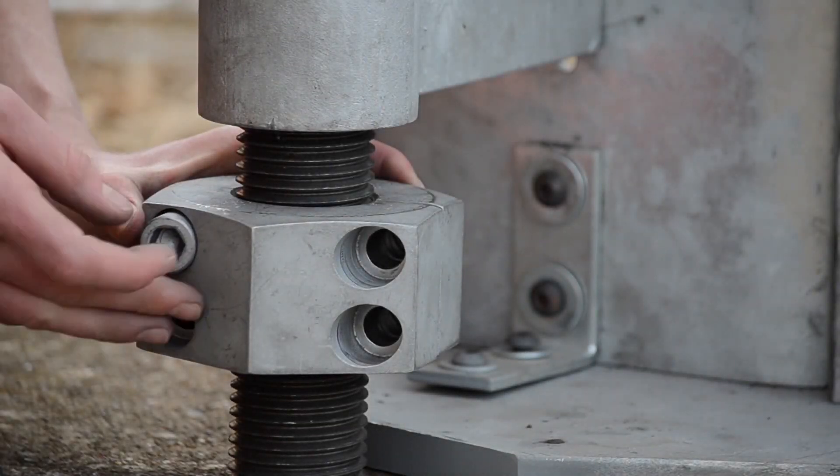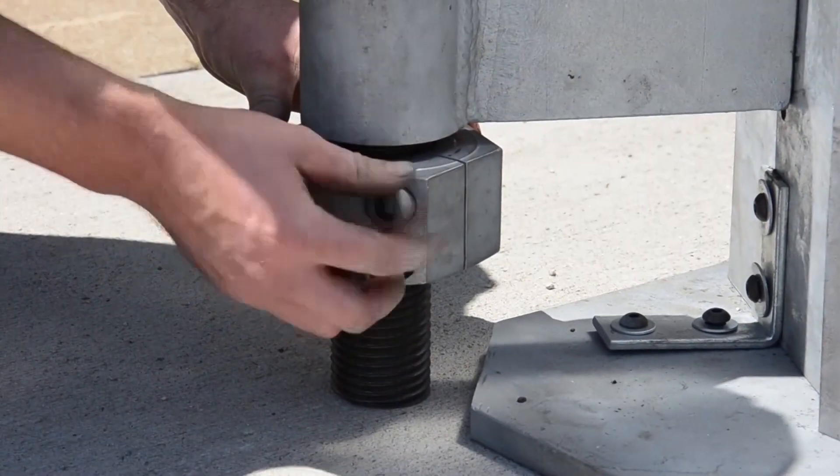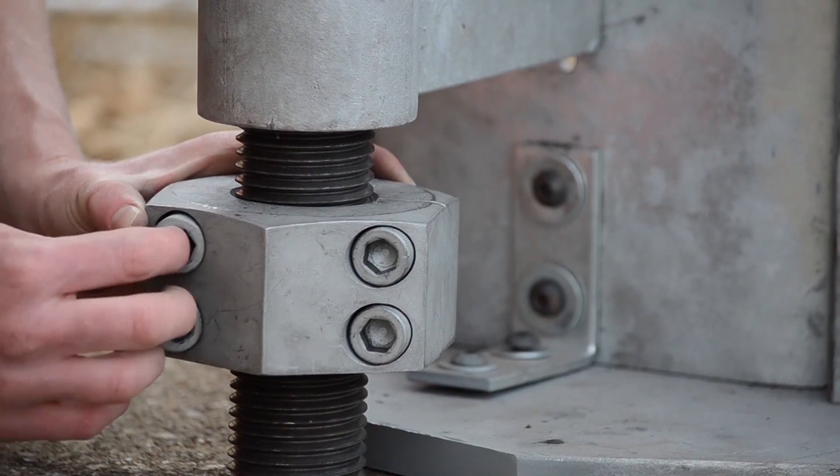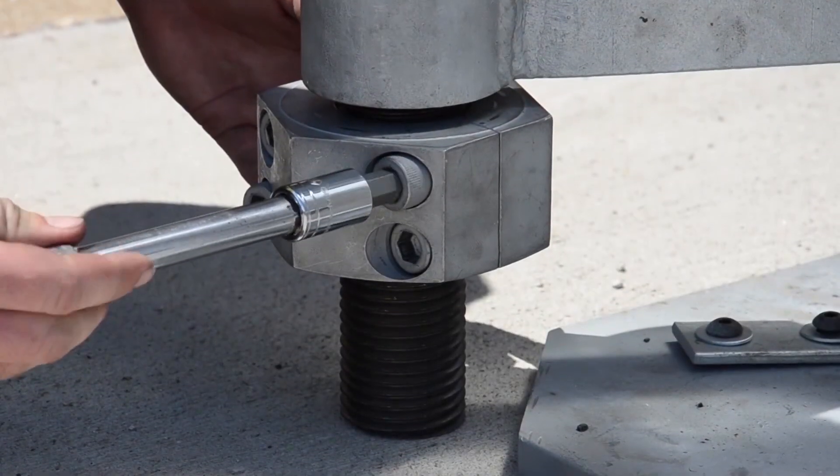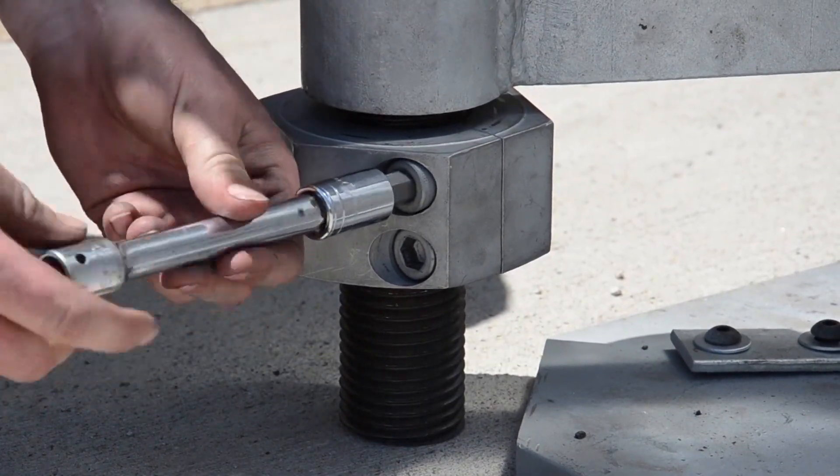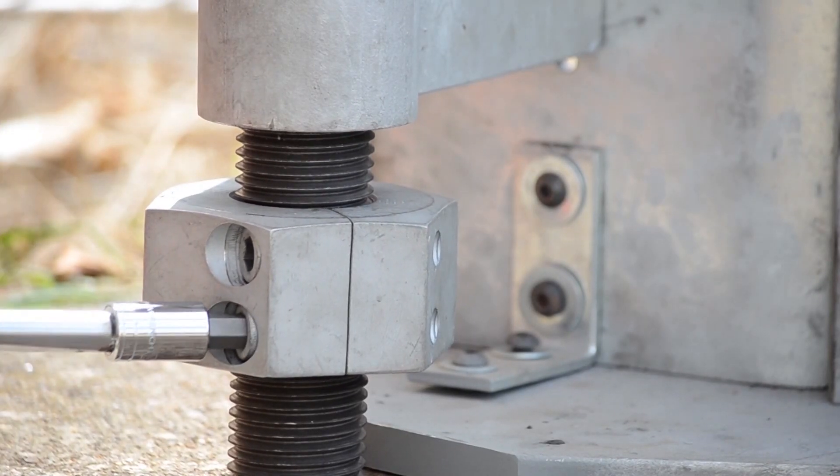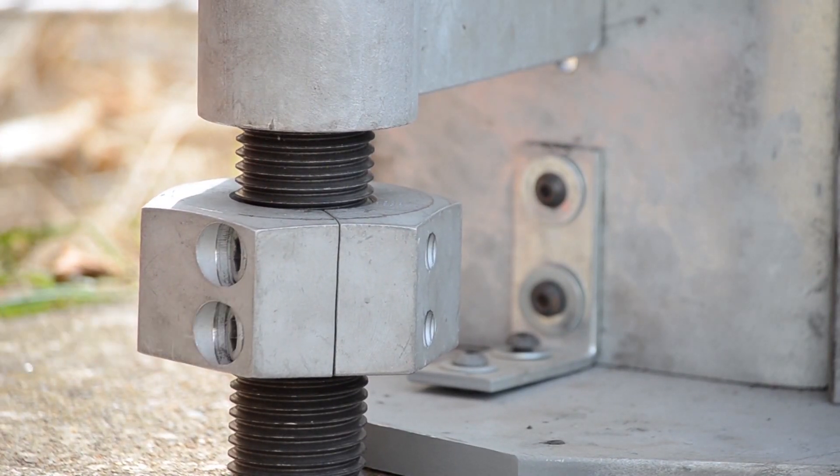Step 2: Insert all four socket head cap screws to join the halves together. Tighten the screws snug tight. Use a socket wrench to tighten the two sides together until maximum tension is achieved. The desired tension is 50 foot-pounds per socket head cap screw.